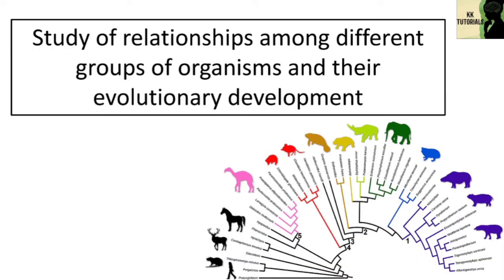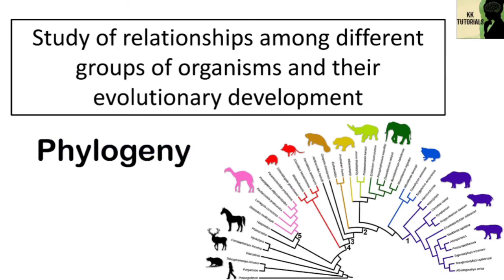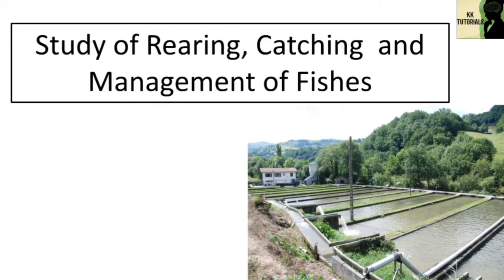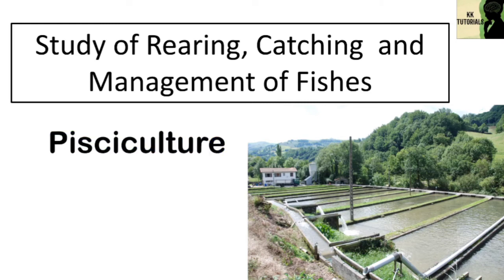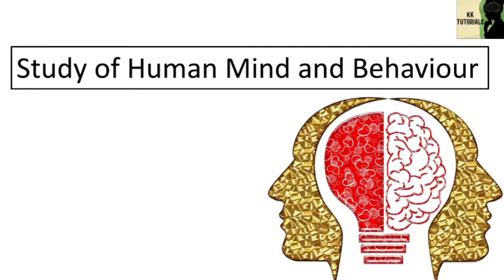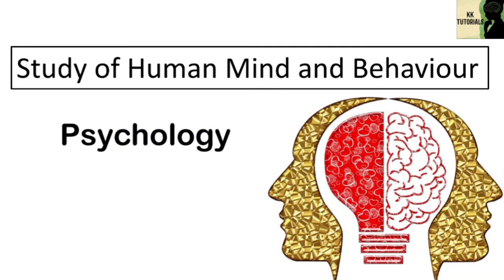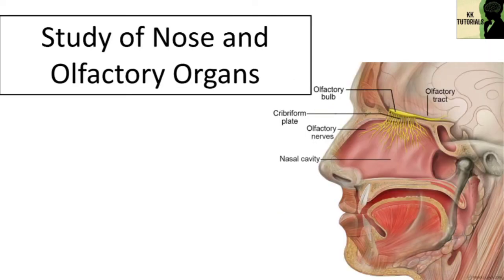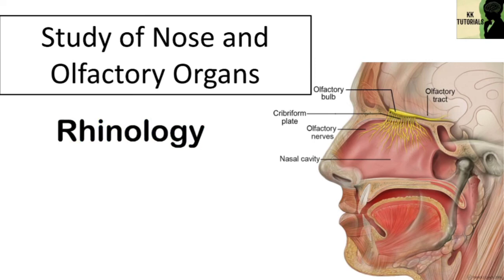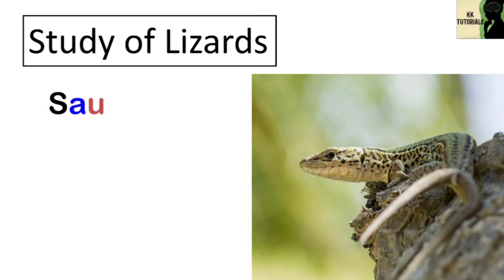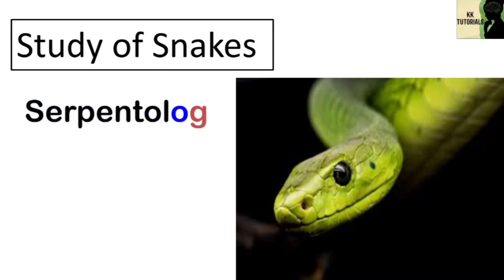The study of relationships among different groups of organisms and their evolutionary development is called phylogeny. The study of rearing, catching, and management of fish is called pisciculture. The study of human mind and behavior is called psychology. The study of the nose and olfactory organs is called rhinology. The study of lizards is called saurology. The study of snakes is called serpentology.